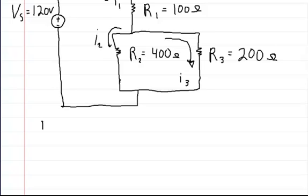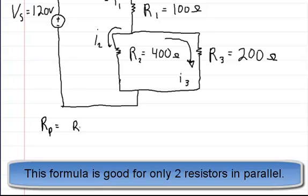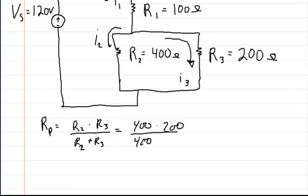I'm going to use this particular method since they're in parallel, but they're not the same resistance value. So we're going to say the resistance in parallel is equal to R2 times R3 divided by R2 plus R3. You can always use this one when you have two in parallel. So R2 is 400 times R3, which is 200 divided by 400 plus 200. So you're going to get 80,000 divided by 600, and that's going to give you 133.3 ohms.